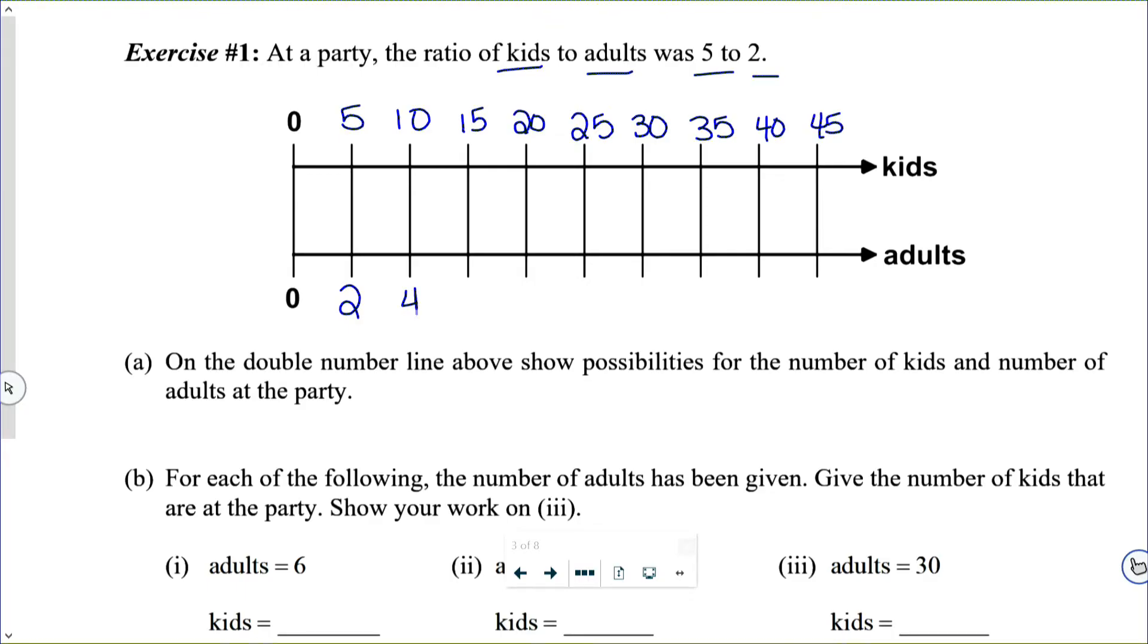Whereas the adult number line is going to go 2, 4, 6, 8, 10, 12, 14, 16, 18.